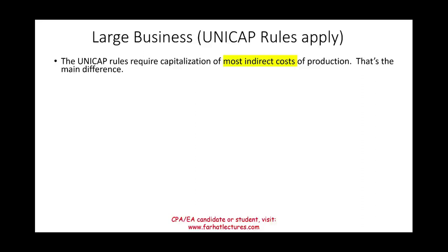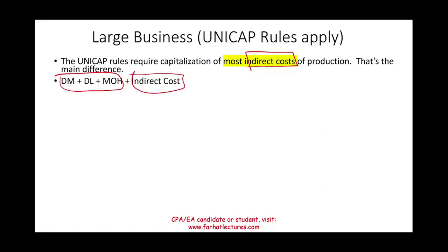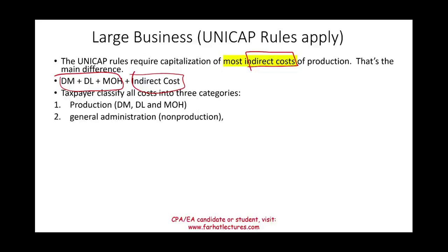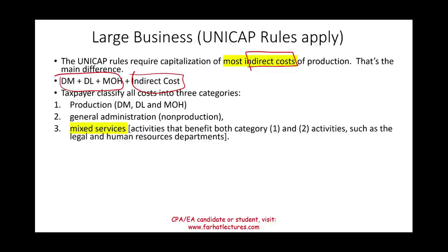The difference for large businesses under UNICAP is that indirect costs must be capitalized. The UNICAP rules require capitalization of most indirect costs of production. Direct material, direct labor, and manufacturing overhead we already know — now we add indirect costs. The taxpayer must classify costs into three categories: (1) production costs — direct material, direct labor, manufacturing overhead; (2) general and administrative costs — usually non-production; and (3) mixed services.